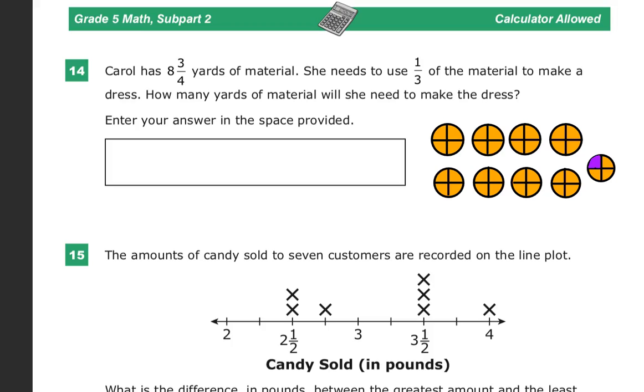Welcome. This is question number 14 on the grade 5 Teen Ready Practice Test, subpart 2. We can use the calculator here if we want. Carol has 8 and 3 fourths yards of material. I've represented it over here with these circles that sort of remind me of 1990s X-Men cartoons. She needs to use one-third of the material to make a dress. How many yards of material will she need to make the dress?